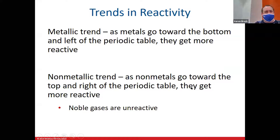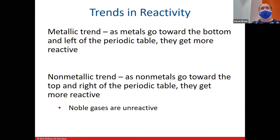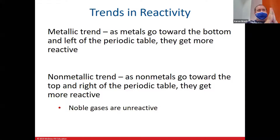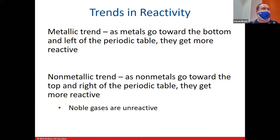When it comes to reactivity, there are two general trends — one for metals and one for non-metals. For metals: as you go down the table and toward the left, metals get more reactive. Alkali metals are the most reactive, alkaline earths are next, and transition metals tend to be less reactive. The further down the table, the more reactive they get.